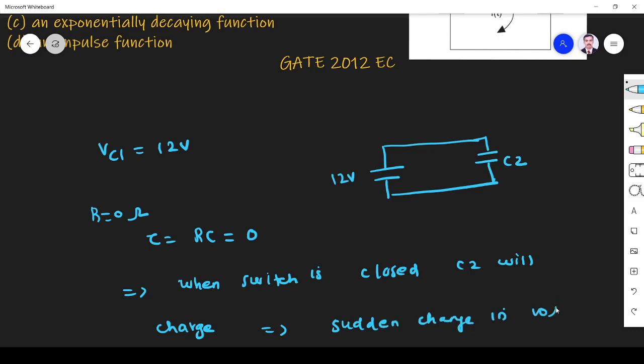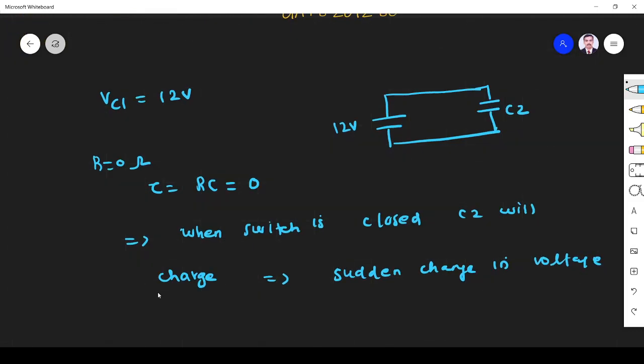Sudden change in voltage is possible. When is it possible? This is possible only if impulse of current passes through this.